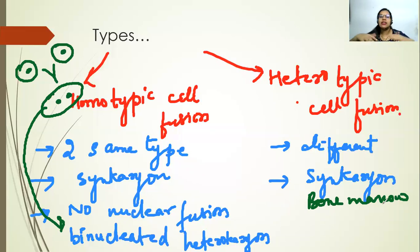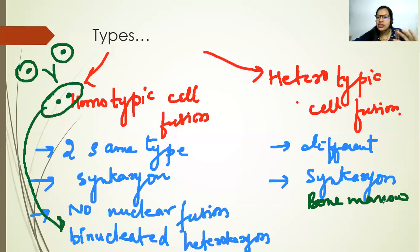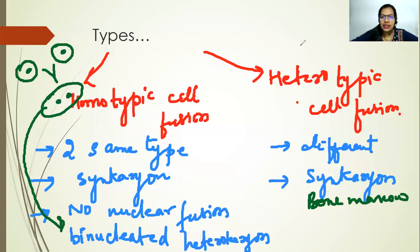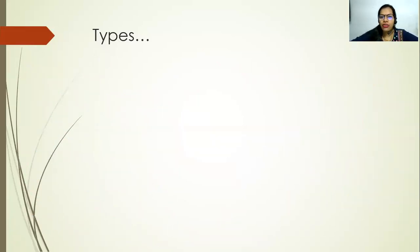Let's revise. There are two types of cell fusion: homotypic and heterotypic. Homo means the same type of cells are getting fused, whereas in heterotypic, different types of cells are fused. Once fusion takes place, it is called a syncaryon because the cytoplasm is getting mixed. When the nucleus is not fused, the hybrid cell having two different nuclei is called a binucleated heterocaryon.